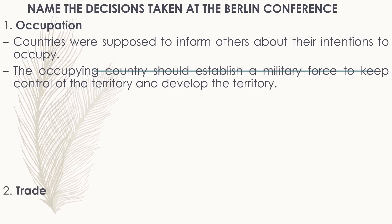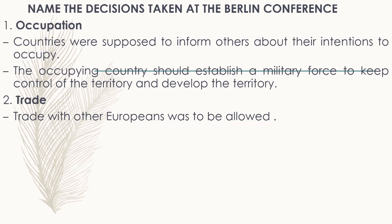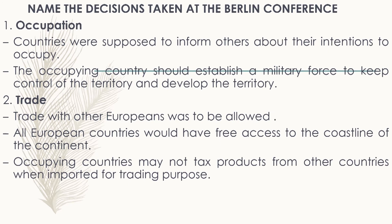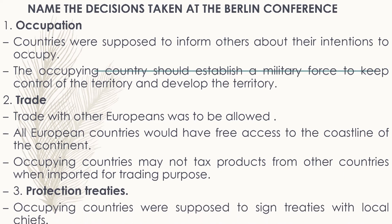The second decision was about trade with other Europeans. All European countries would have free access to the coastline of the continent. Occupying countries may not tax products from other countries when imported for trading.